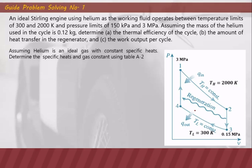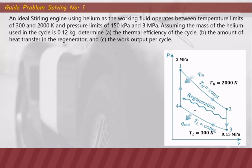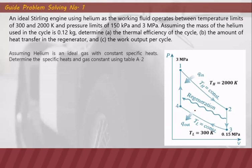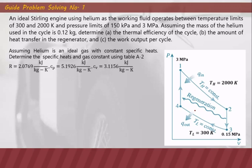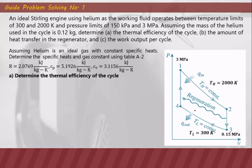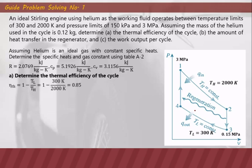For the thermal efficiency of the Stirling, Ericsson, and Brayton cycles, we can use the Carnot cycle efficiency as our definition of thermal efficiency for these reversible cycles. Assuming helium is an ideal gas with constant specific heats, we first determine the specific heats and gas constant of helium using Table A-2. By definition, thermal efficiency equals 1 minus TL over TH. Substituting the values of TL and TH, our thermal efficiency is 85 percent.